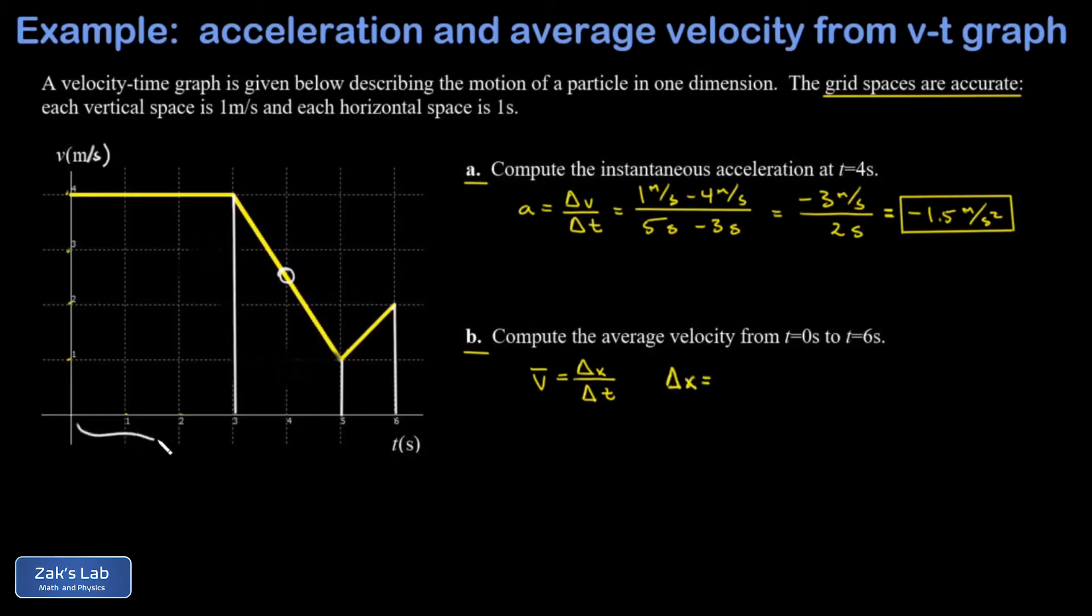So delta x starts with the area of this rectangle and that has a base of three seconds and a height of four meters per second. And then the area of the large trapezoid that has a base of two seconds, it has one height of four meters per second and then another height of one meter per second.